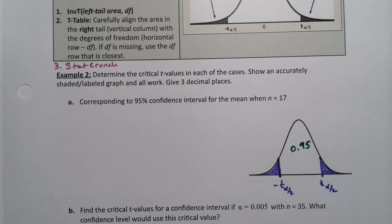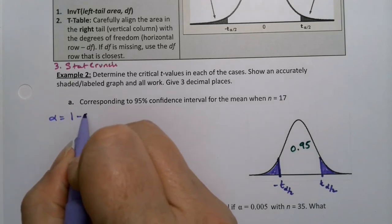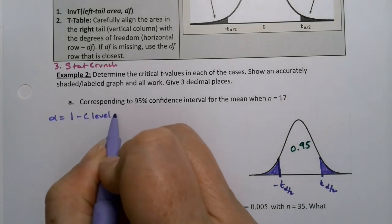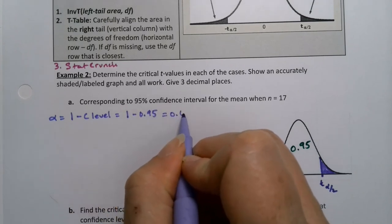Alpha is the complement of our confidence level. So alpha is 1 minus the c level, which is 1 minus 0.95, which is 0.05. So there's alpha.